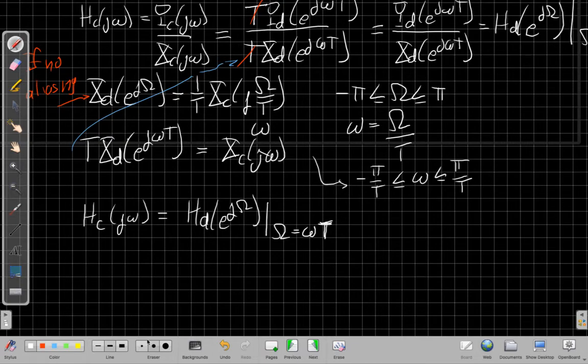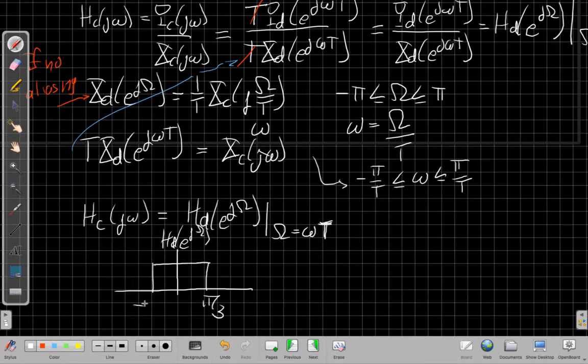Okay, so what that says is, coming back it sort of fits with our earlier example. I had my discrete time filter cut off at plus or minus π/3.